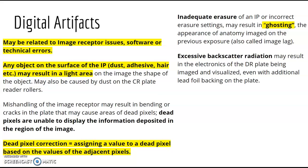Mishandling of the image receptor can result in bending or cracks, and may cause areas of dead pixels. Dead pixels can't display information, so you might see a small white area that keeps coming up. In room 5, there's a dead pixel — I see it most often on lateral chest x-rays. There's a term called dead pixel correction: it assigns a value to a dead pixel based on the surrounding pixels and collects them together.